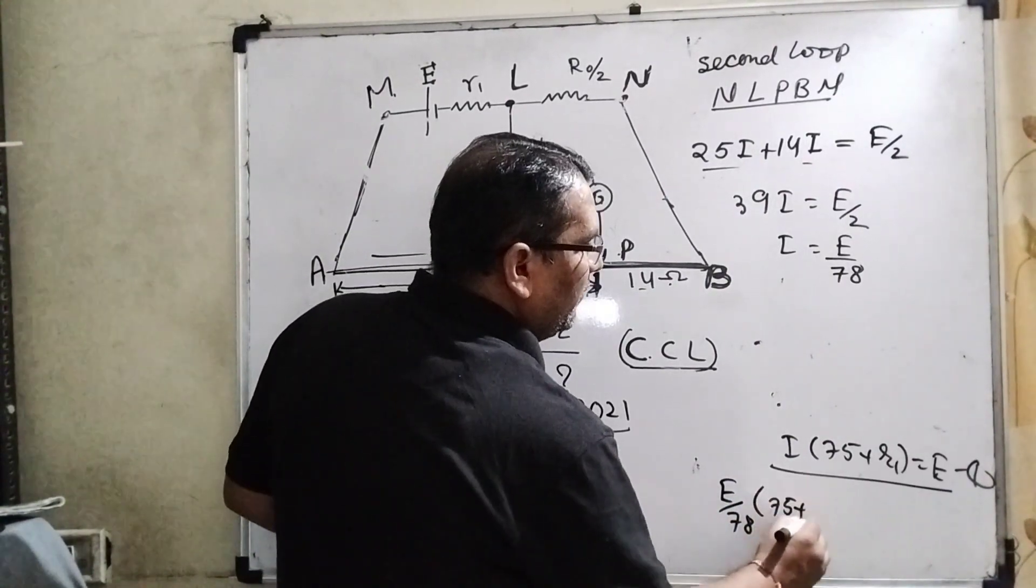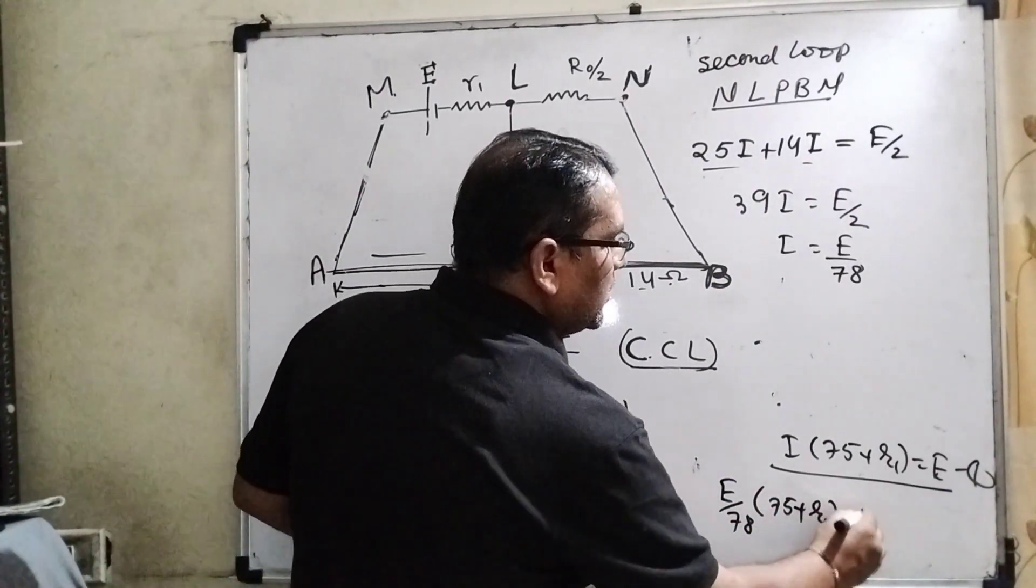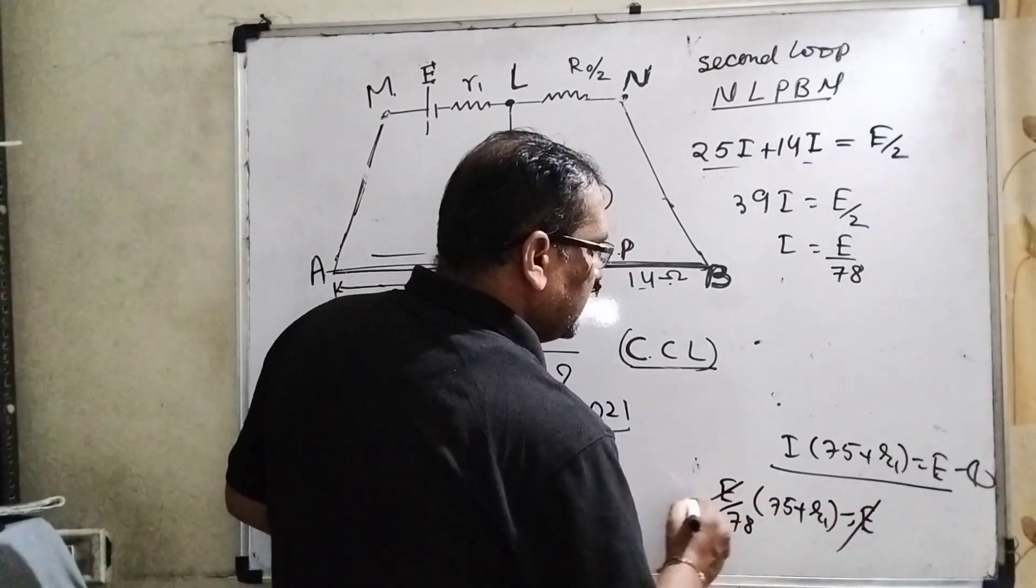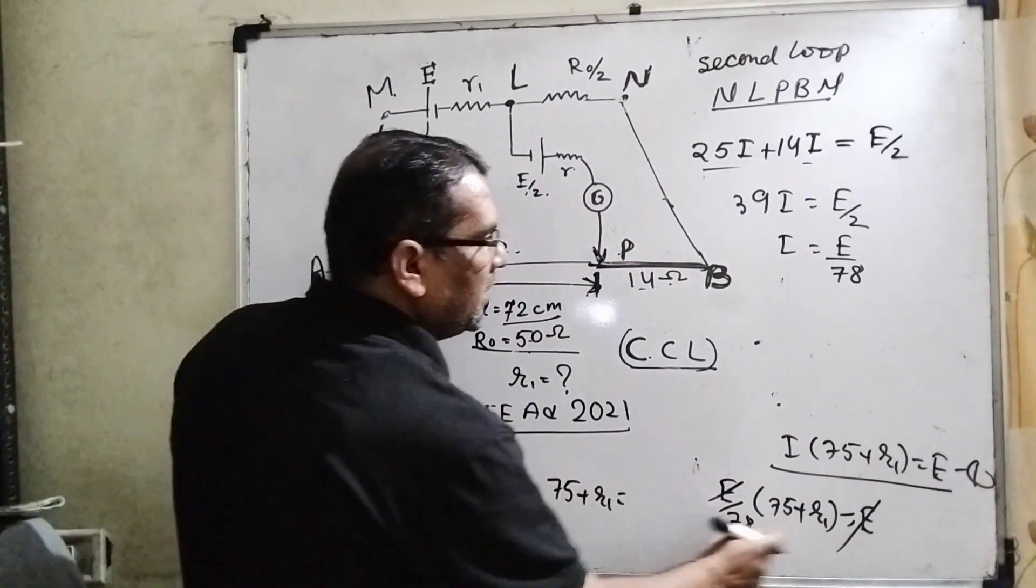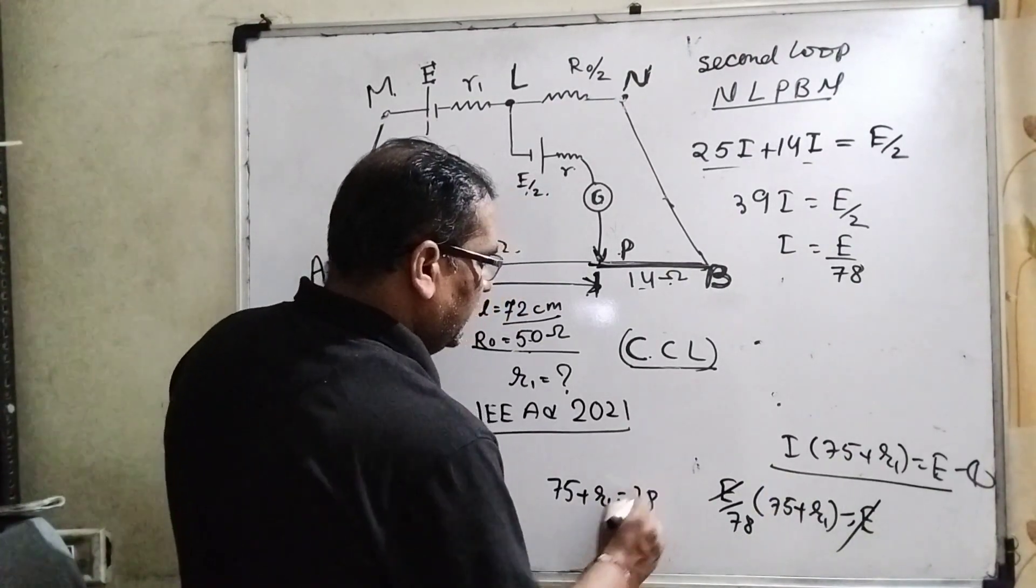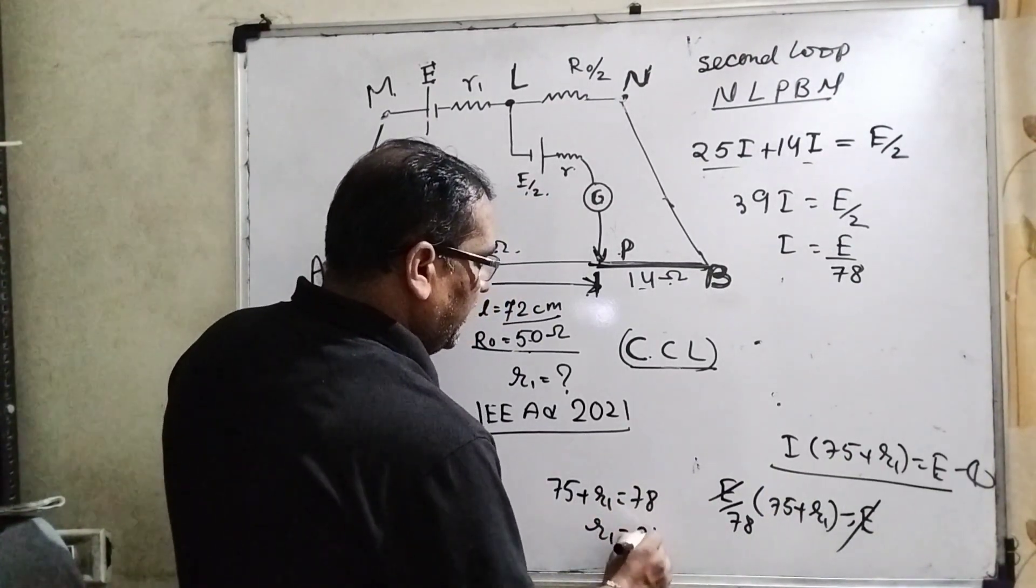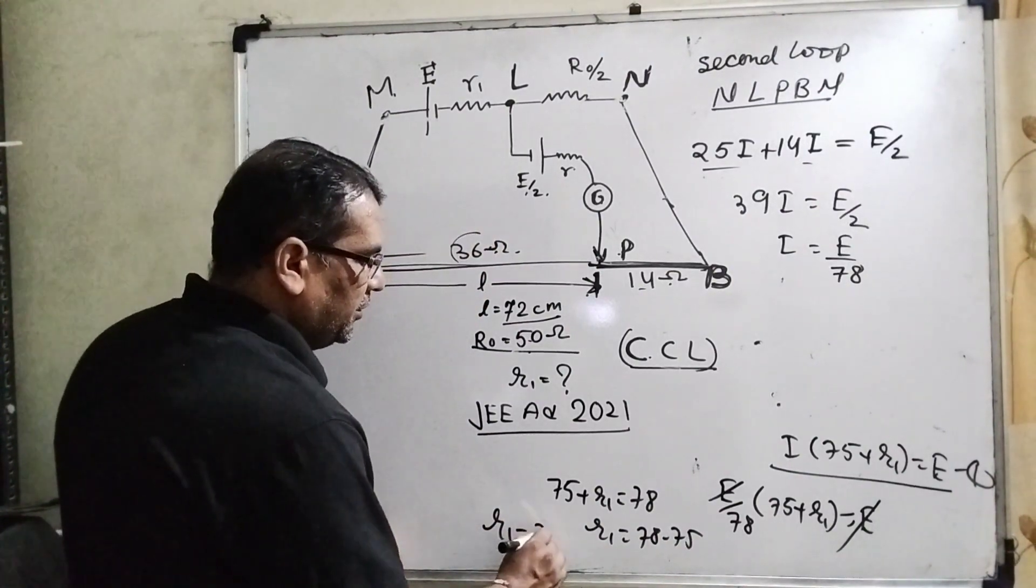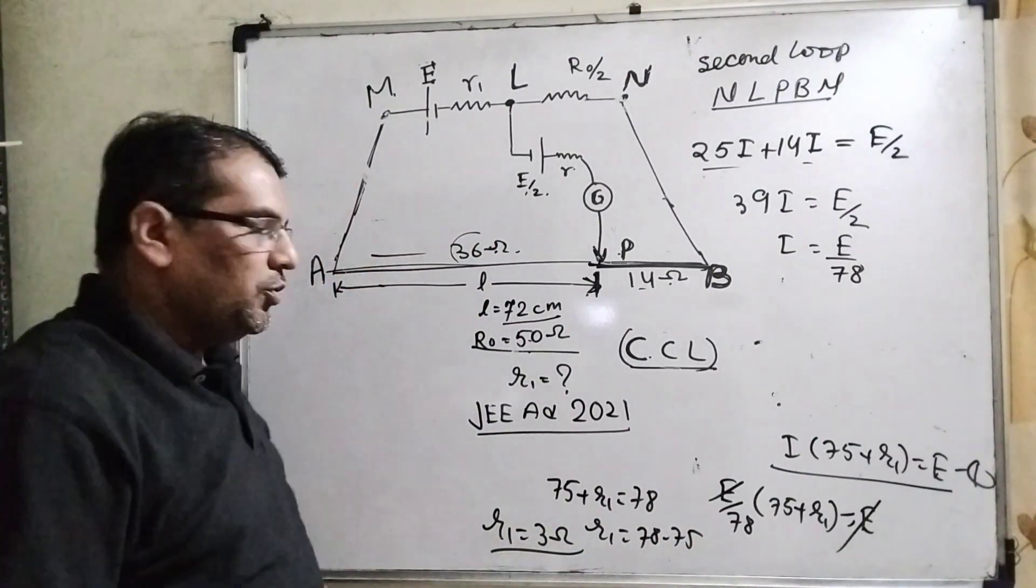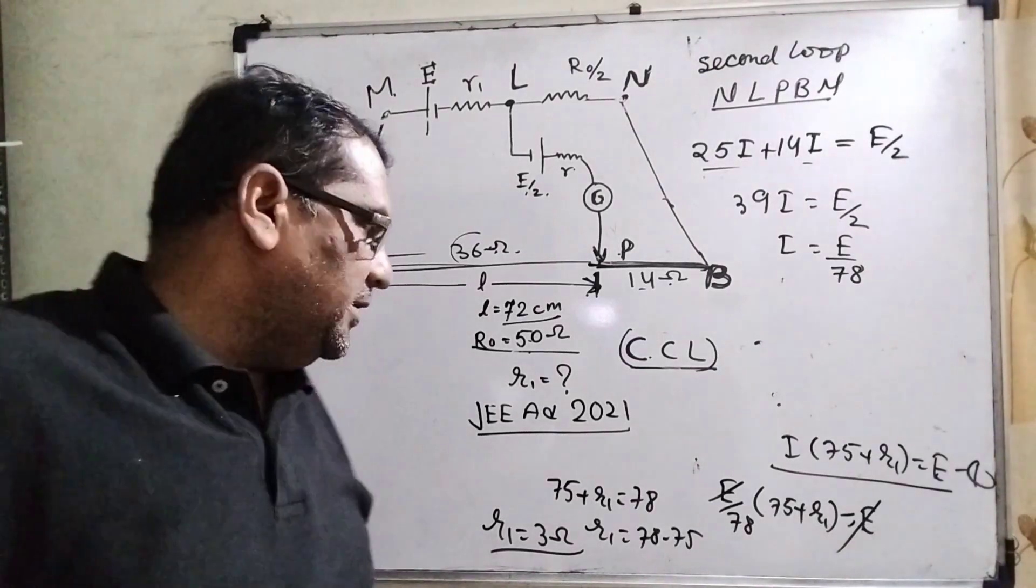Here the value of I is E by 78. So (E by 78) times (75 plus R1) equals E. E cancels out. Now 75 plus R1 equals 78. When 78, then R1 equals 78 minus 75, so R1 equals 3 ohms. Therefore, the correct answer is 3 ohms.